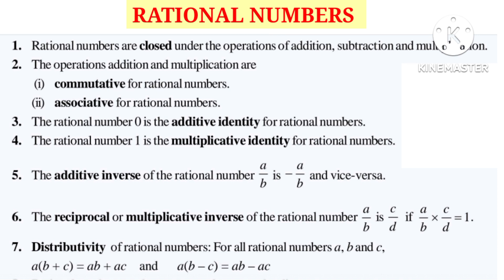That is, if we take A and B as any two rational numbers, then A plus B is equal to B plus A. In multiplication, A into B is equal to B into A.